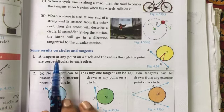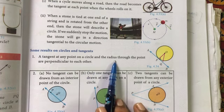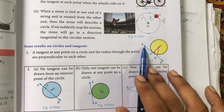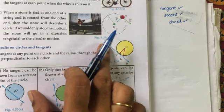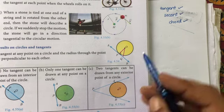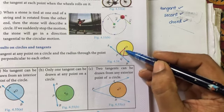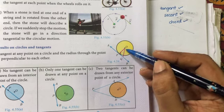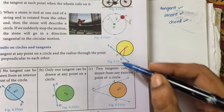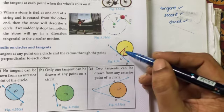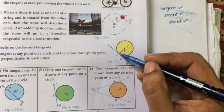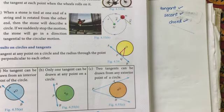A tangent at any point on a circle and the radius through that point are perpendicular to each other. Let's draw a tangent to a circle at point P. If you join the center of the circle to point P, that is the radius. The radius is always perpendicular to the tangent. The radius from the center of the circle to the point where the tangent meets is always perpendicular to the tangent.